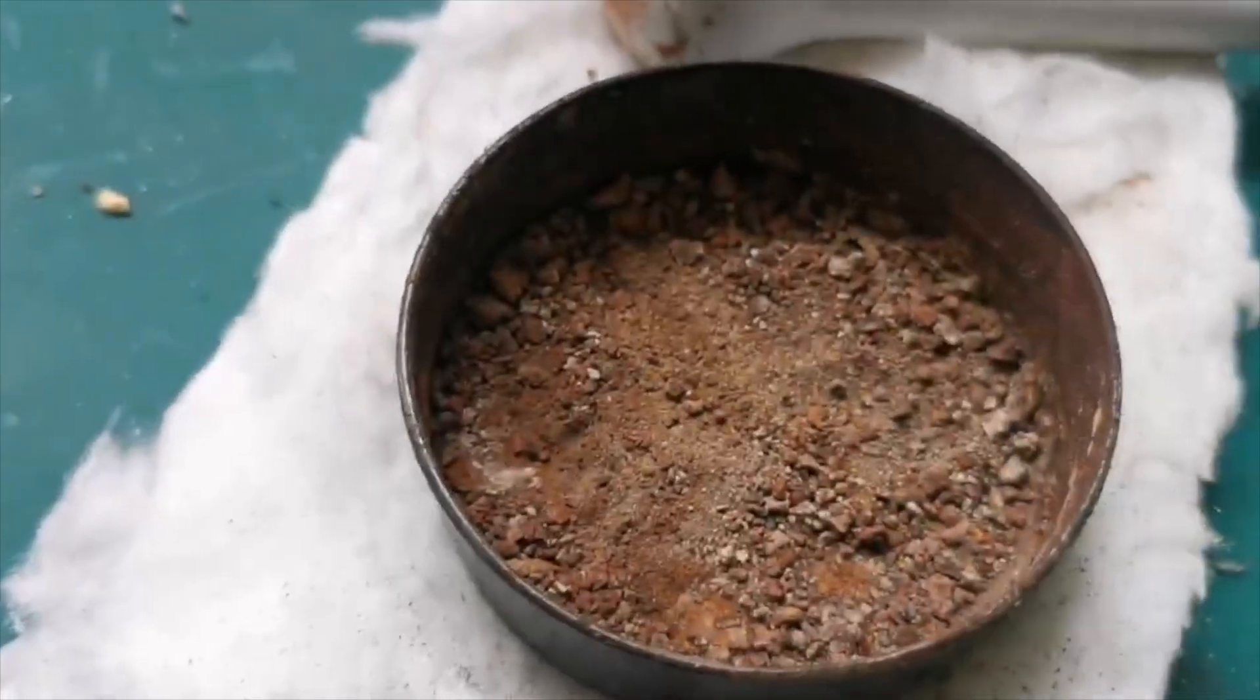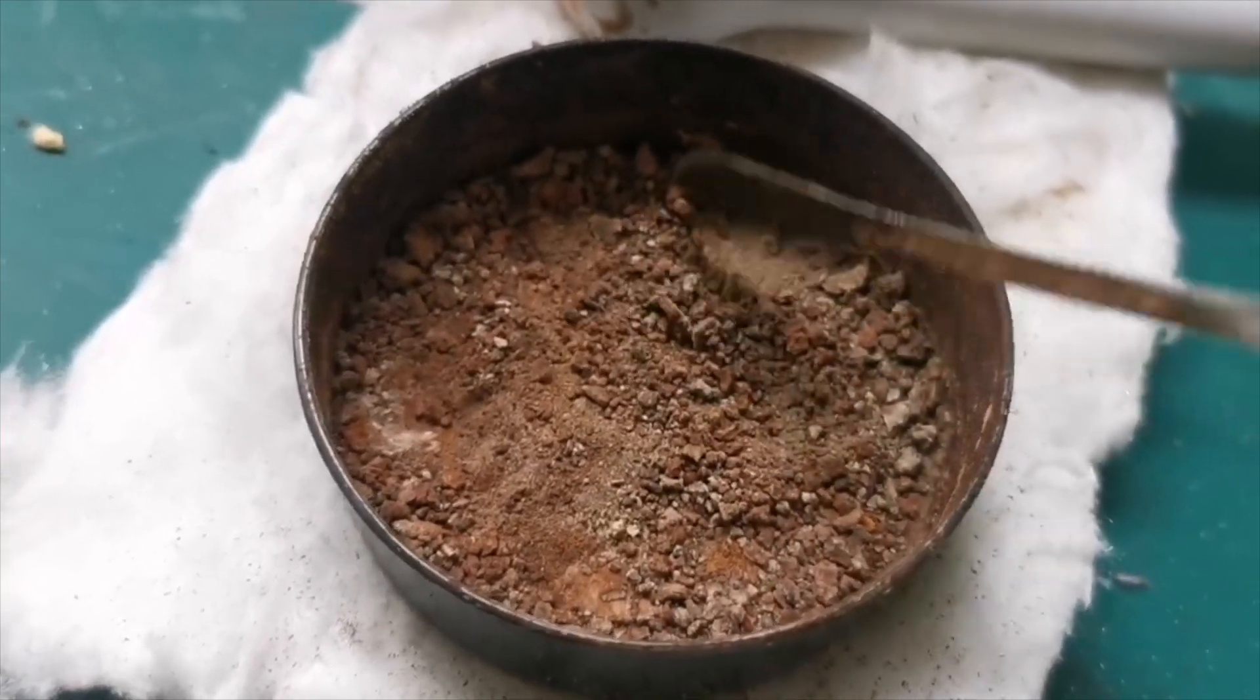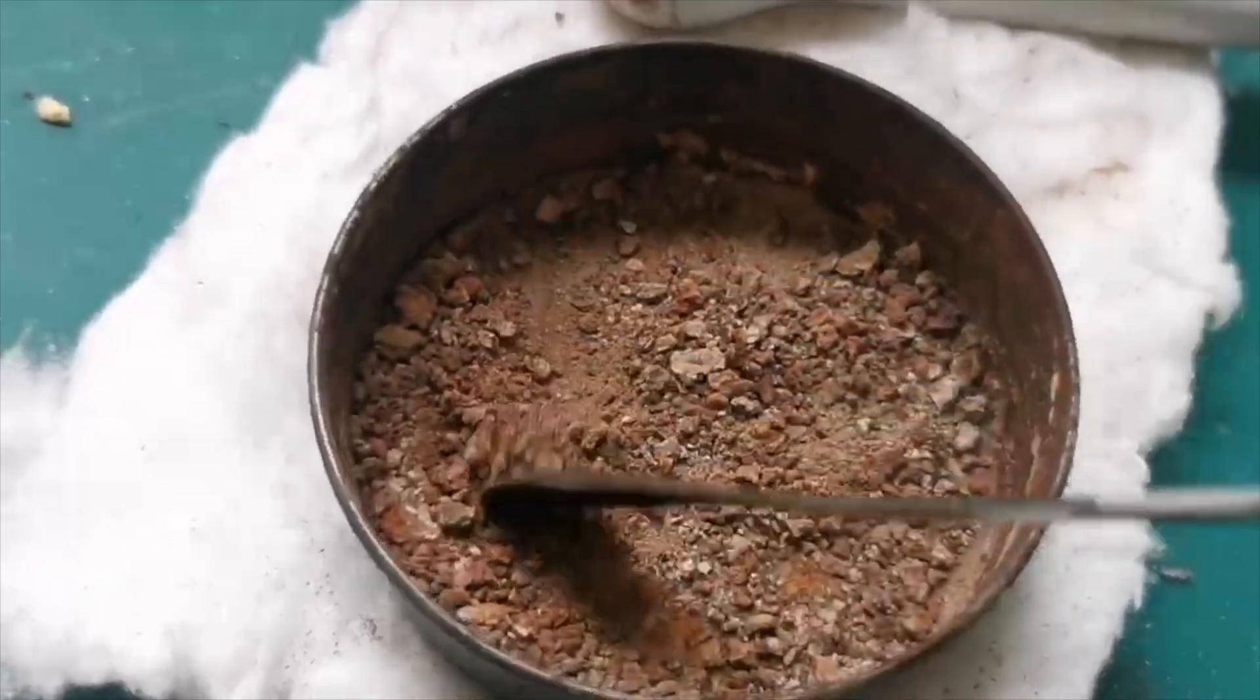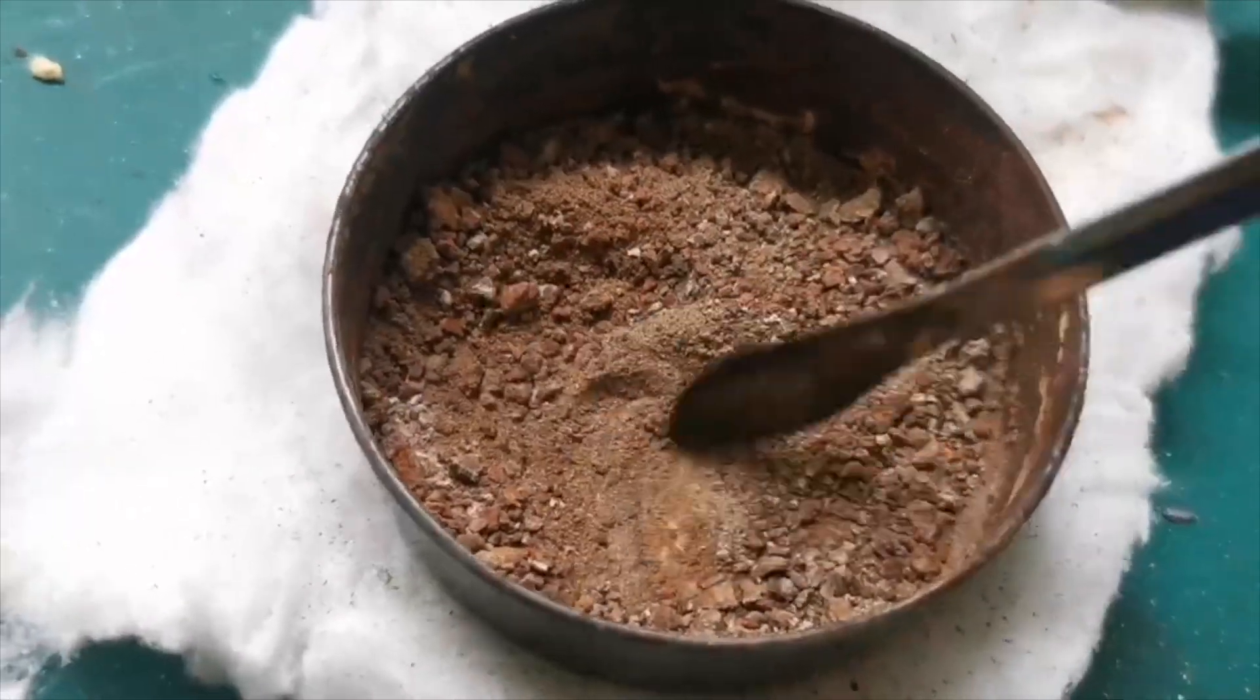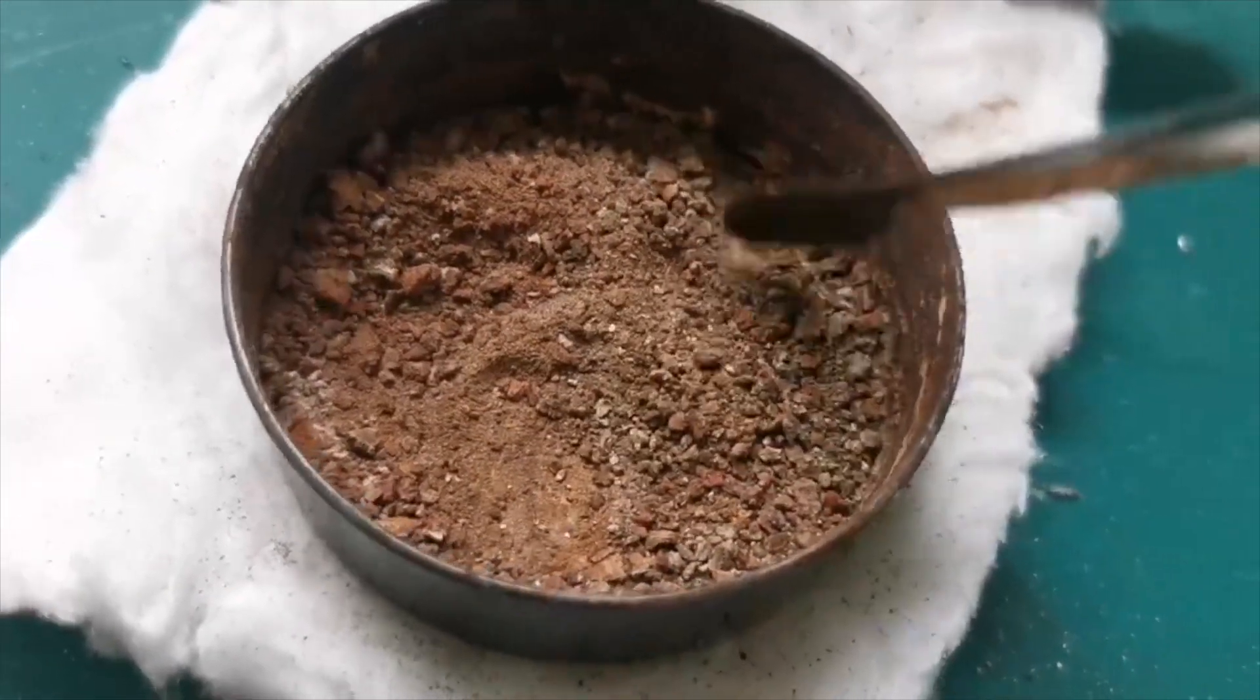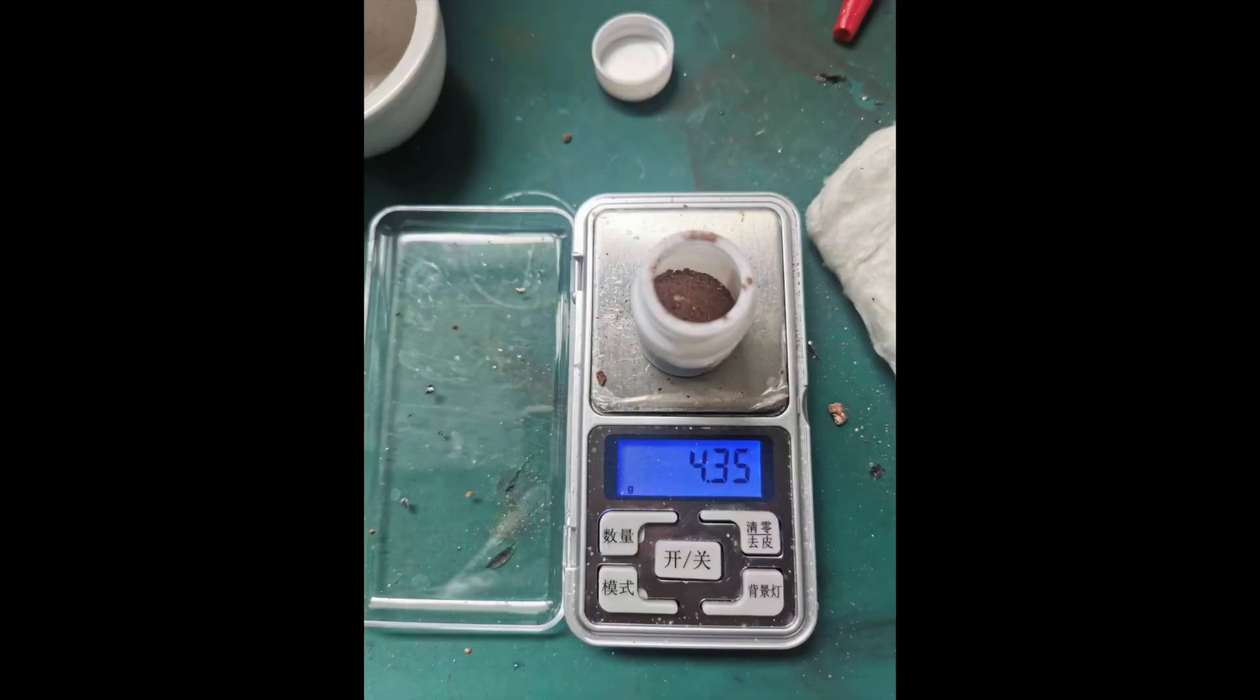Finally, I took out my dish of lanthanide oxalate and roasted it with a blowtorch to convert it into the oxides. Notice that it is not uniform in all places. Underneath the top layer, there were still a bunch of unreacted oxalates, so the color was a lot lighter. I transferred the brown powder into a vial, and its mass is 4.35 grams. I can use this to make anhydrous lanthanide chloride as well, and then electrolyze it to make the metals.